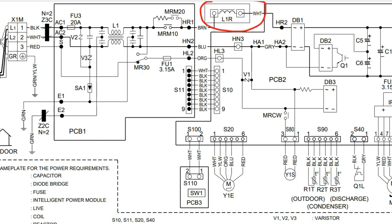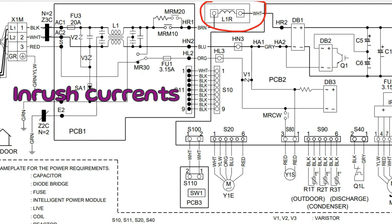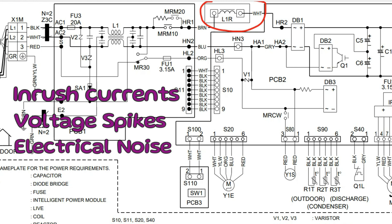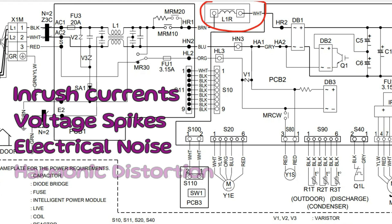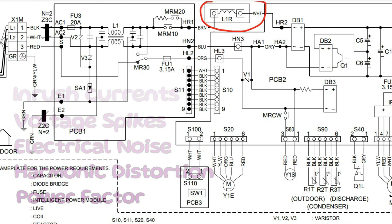The purpose of a reactor is just another layer of filtering. It filters out inrush current — so when a motor first starts up and pulls higher current, it kind of flattens that out. It also helps with voltage spikes, reducing electrical noise and disturbance, harmonic distortions, and power factor. It works on a lot of different things to help stabilize that circuit even more.